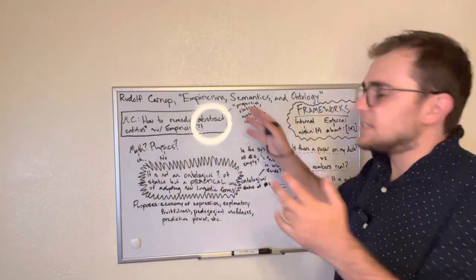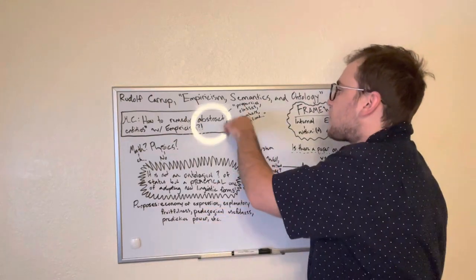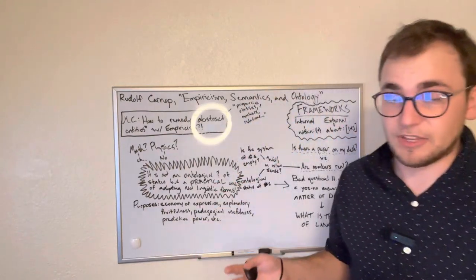Abstract entities, he means, and he kind of explains this within the work, properties, classes, numbers, relations, and he even gives more.